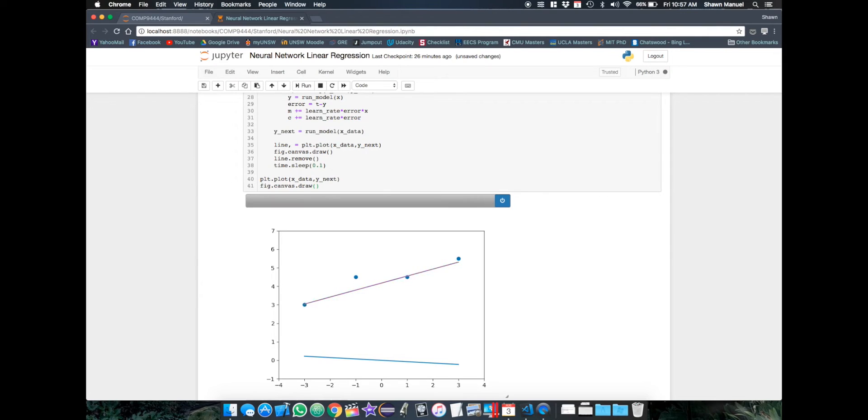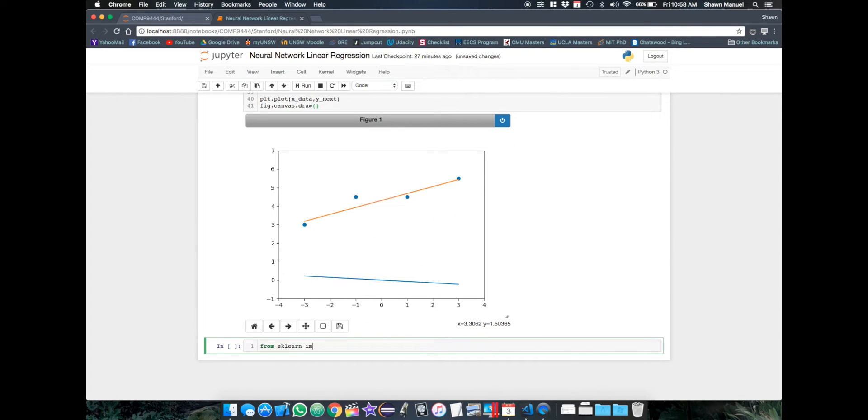But how do we actually know that our model is a true linear regression? Well, we can compare it to an actual linear regression model from scikit-learn. So we'll import the linear model from scikit-learn and we'll define our linear model as linear regression and fit it to the data,